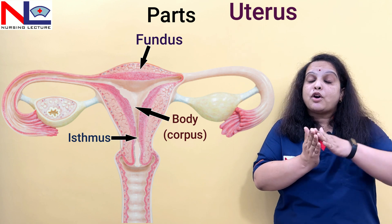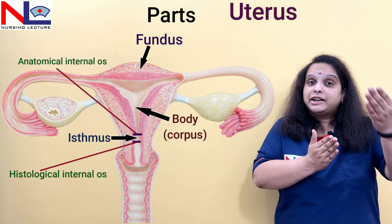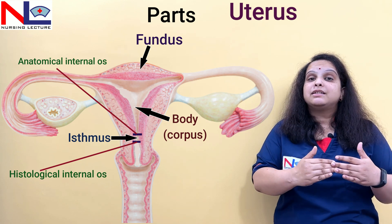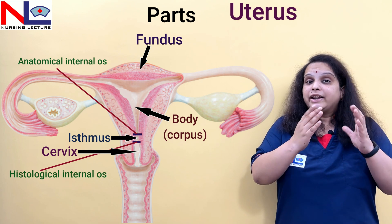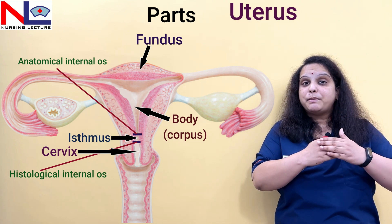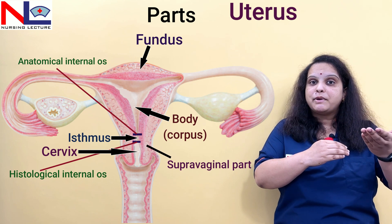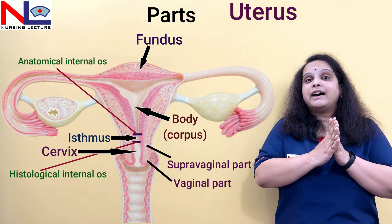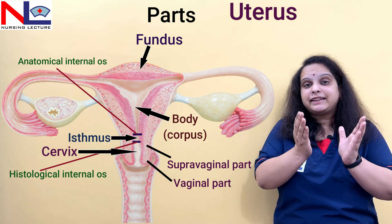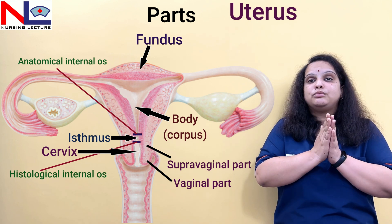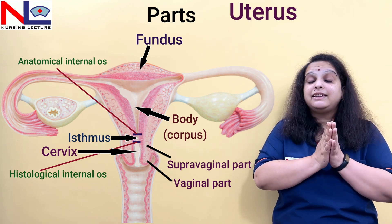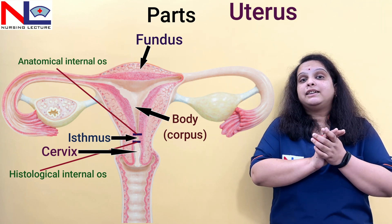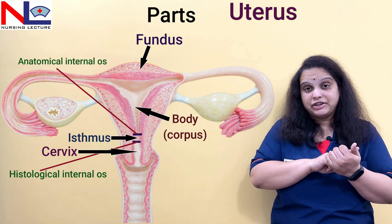The LSCS — lower segment caesarean section — is where the isthmus forms the lower segment. The isthmus extends from the anatomical internal os to the histological internal os. Below the isthmus is the cervical region, which is divided into two parts: the part that lies above the vagina is the supra-vaginal part, and the part of the cervix which lies within the vagina is the vaginal part. In between these parts there is a canal called the cervical canal, which has important obstetric significance as we measure dilatation through this cervical part.